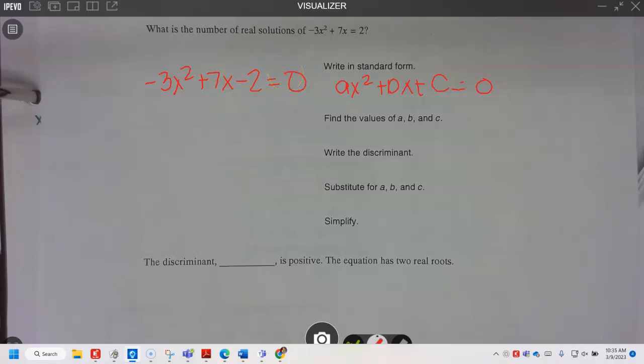So standard form for our problem is going to be moving over that 2, so you have -3x² + 7x - 2 = 0. Then find the discriminant, so my discriminant is b² - 4ac. So 3 negatives make a negative, 4 times 3 is 12, 12 times 2 gives 24. 49 minus 24 is 25. The discriminant is positive, therefore I have two real roots.